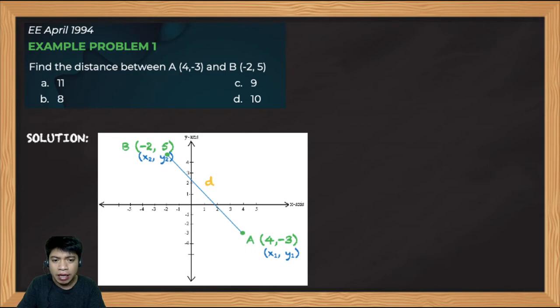Let me just repeat, it doesn't matter if you assign point B as point 1 and point A as point 2. Even if the vertical or horizontal distance becomes negative, it will become positive because we square them individually.